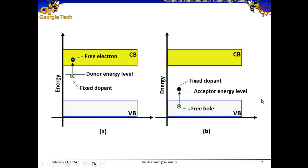On the other hand, for P-type semiconductors, the activation energy is the amount of energy required to move an electron from the valence band to the acceptor energy level, leaving behind a hole in the valence band. In other words, for a P-type semiconductor, activation energy is the energy difference between the acceptor energy level and the valence energy level.